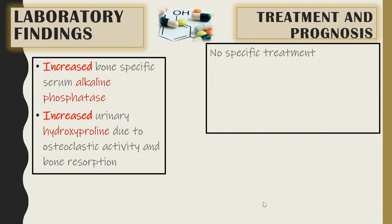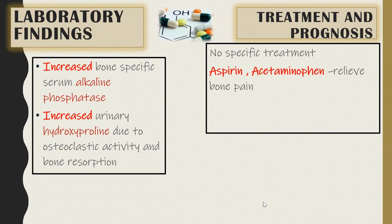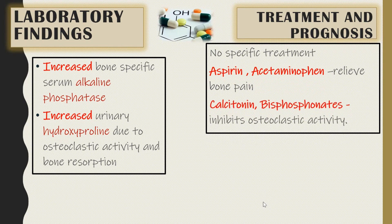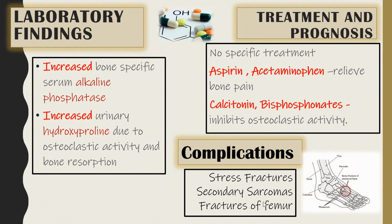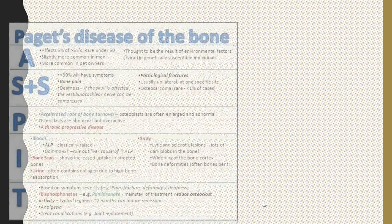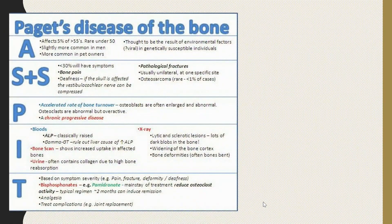There is no specific treatment for Paget's disease. Aspirin and acetaminophen are given to relieve bone pain. Calcitonin and bisphosphonates are used to inhibit osteoclastic activity. Complications include stress fractures, secondary sarcomas, and fractures of the femur.